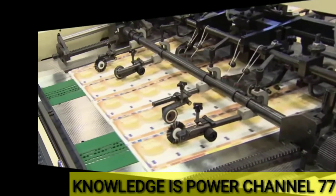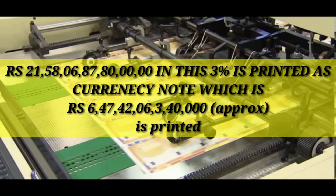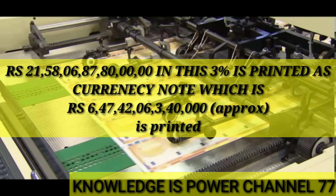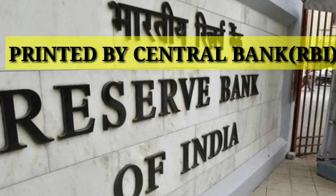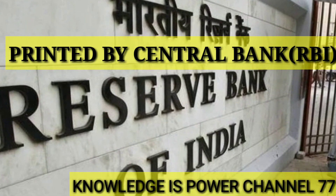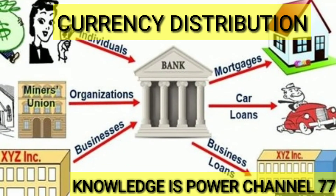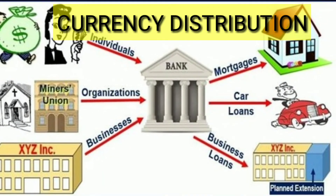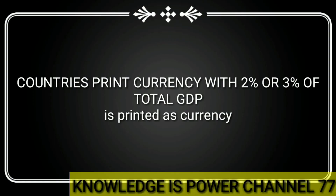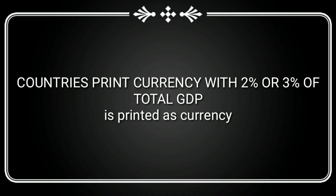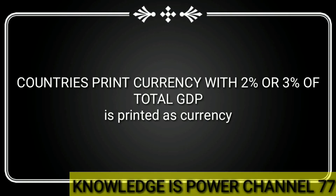About 2 to 3 percent of that is printed as currency notes. These notes are printed by the central bank and distributed to various banks, ATMs, providing loans, etc. So a country's currency is printed based on gross domestic product — 2 to 3 percent of the total GDP is printed as currency.